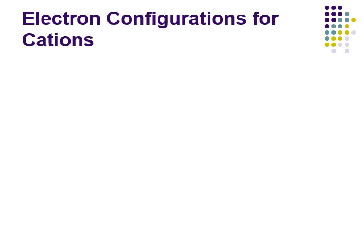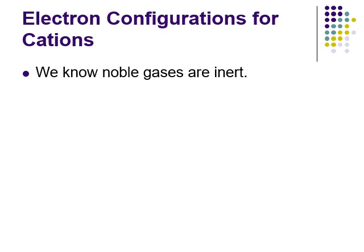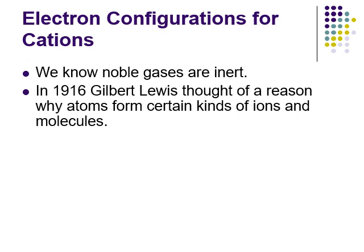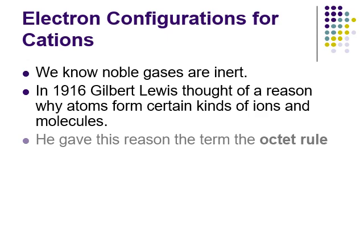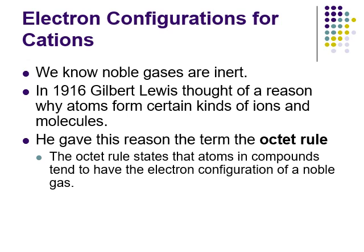Now we're going to start looking at electron configurations and what this means in terms of ions. We know the noble gases are inert - they don't react - and they became our baseline of understanding. In 1916, a chemist came up with a reason why atoms form different kinds of ions and molecules. We can use Lewis's idea to explain why metals form specific cations. The reason behind this was an idea called the octet rule: atoms in compounds tend to have the electron configuration of a noble gas, because the noble gases are stable and things react to become stable.